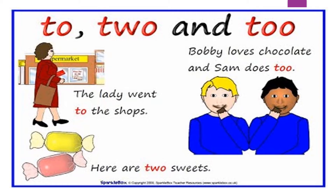Here, 'to' means 'ki or' or 'taraf' — the lady went towards the shops. The next sentence is: 'Here are two sweets.' The spellings are T-W-O. You all know about it, it's very easy — it is a number: one, two, three, four. So here it means the number two, 'doh' in Hindi.